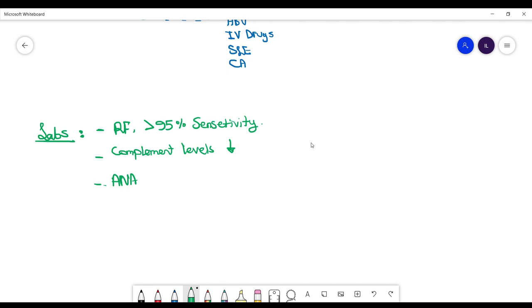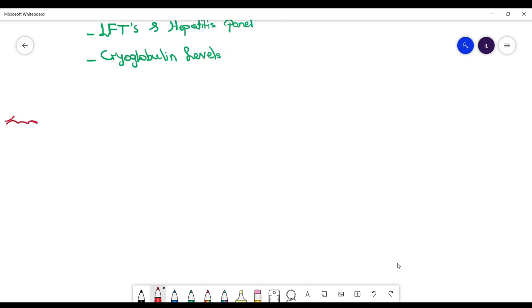Check ANA to rule out other diseases like SLE, liver function tests and hepatitis panel to look for the cause. Hepatitis C is present in around 85% of patients. Check cryoglobulin levels to confirm diagnosis and determine management. For diagnosis, you need clinical symptoms, elevated cryoglobulins, and low complements.